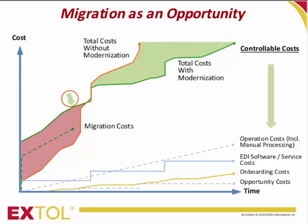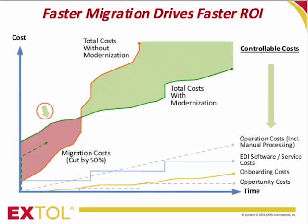ROI depends on many factors, including the number of trading partners you have, the amount of partner volatility and change frequency you experience, the transaction mix you need to support, and the approach you take to migration. It's clear from this chart that the sooner you transition to the modern EDI replacement solution, the better your ROI becomes. To better illustrate that point, let's see what would happen if we could cut our migration costs in half without adding resources.